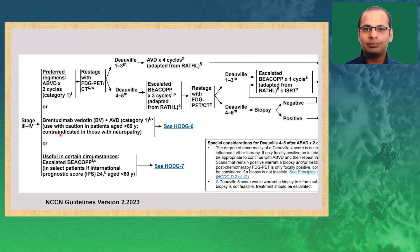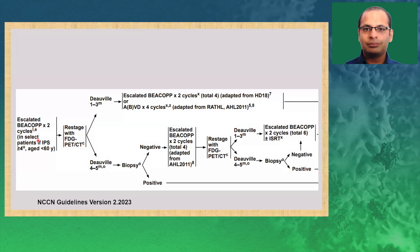For advanced stage — stage 3 and 4 — the first option, commonly used in resource-limited scenarios, is ABVD. If PET is negative per the RATHL trial, omit bleomycin and give four cycles. If PET is positive, give escalated BEACOP for three cycles; if then PET negative, give one more cycle plus/minus radiotherapy; if PET positive, biopsy. For stage 3-4, brentuximab with AVD for up to six cycles is an option — use with caution in elderly patients or those with neuropathy. For younger patients or those with higher IPS scores, escalated BEACOP can be used: give two cycles, do a PET; if negative, give two more cycles or de-escalate to AVD; if PET is still positive after four cycles, consider two more cycles for a total of six.